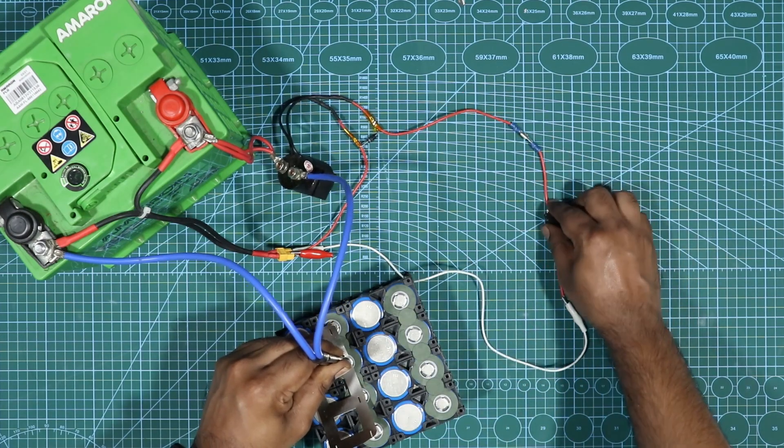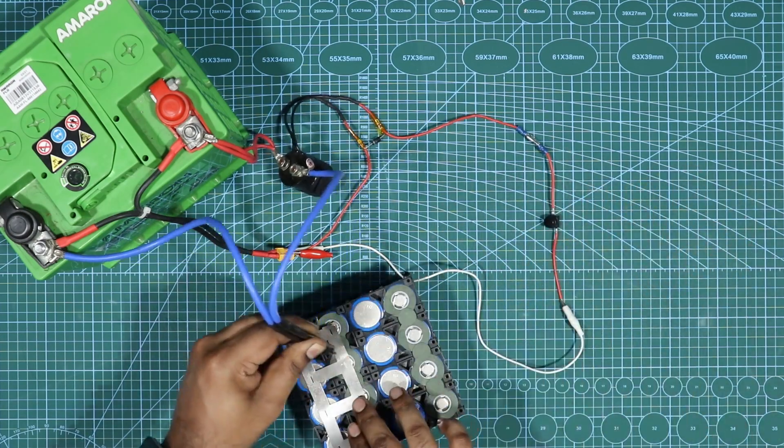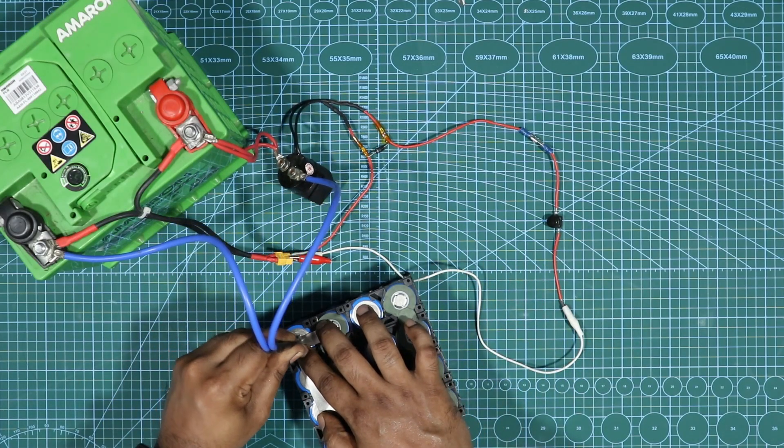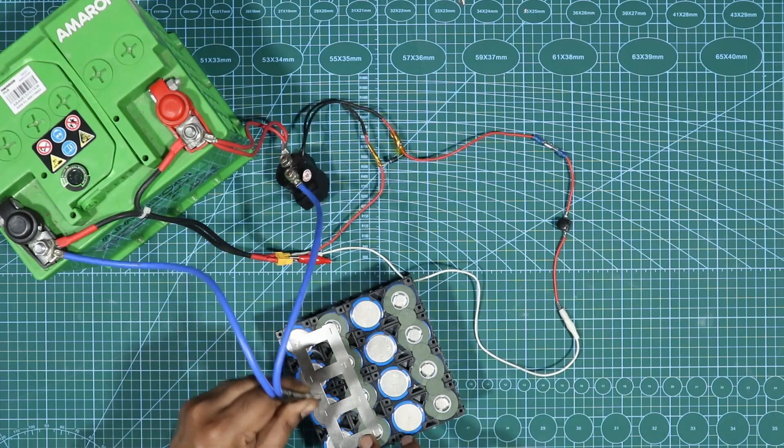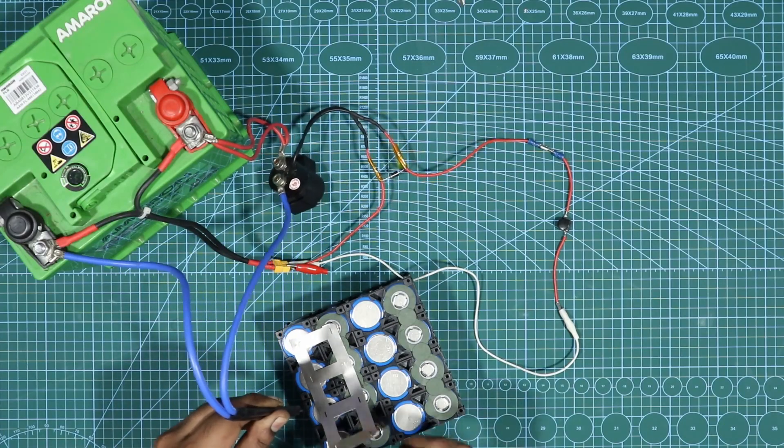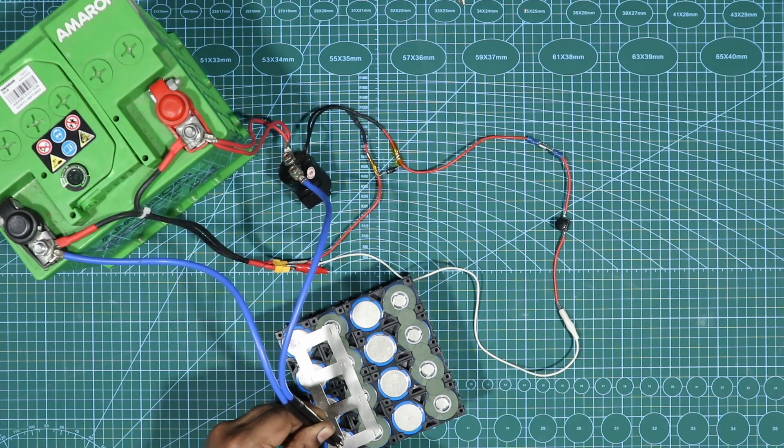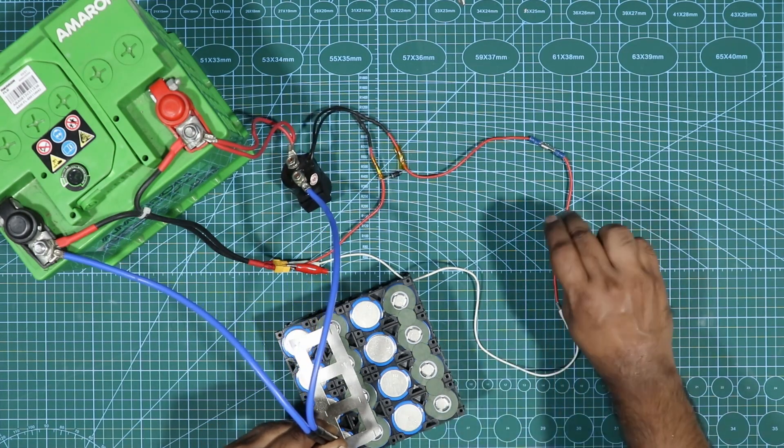Take your time and then spot weld, because once you spot weld there's no way going back because you can peel it off but it'll still leave some residue. Just a quick tap should be fine. As soon as you tap it, it'll do a spot weld. That's it.